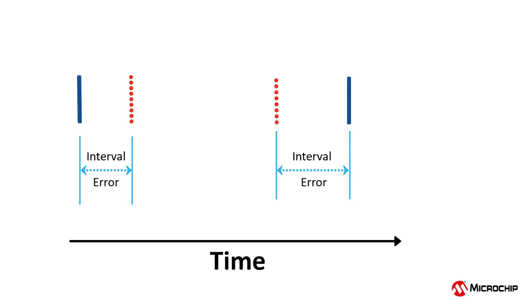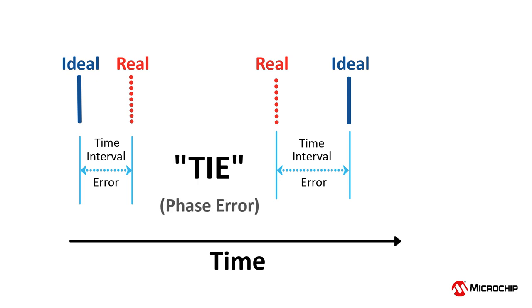We call this error time interval error, or TIE, because it is the error, the time interval, on the time axis between the real clock versus the ideal clock. We could also call this phase error, but it means the same thing in this context, so I will use the term time interval error, or TIE, because that is what it is typically called in timing applications.